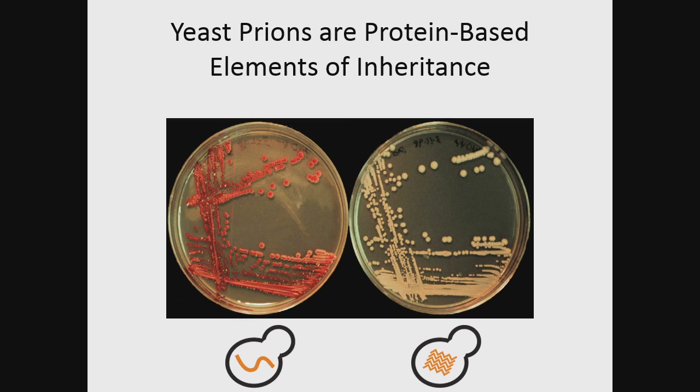Here I'm showing two identical yeast strains at the DNA level that differ in the conformation of the Sup35 protein, which forms the psi prion. These cells all contain Sup35 aggregates, leading to loss of function of the Sup35 protein, while on the left the protein is soluble and active. This not only changes their color between red and white, but also has many pleiotropic effects and changes lots of phenotypes that we can measure in yeast by their growth rate.